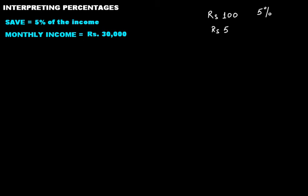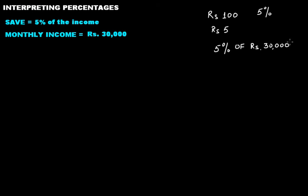If the second condition is given to you — condition one is this, and the information is that your monthly income is rupees 30,000 — then what will you interpret now? You will say that's really simple: I know my saving is five percent of my income. If my monthly income is rupees 30,000, it means that if I save rupees five on 100, my saving at the end of the month will be five percent of rupees 30,000.